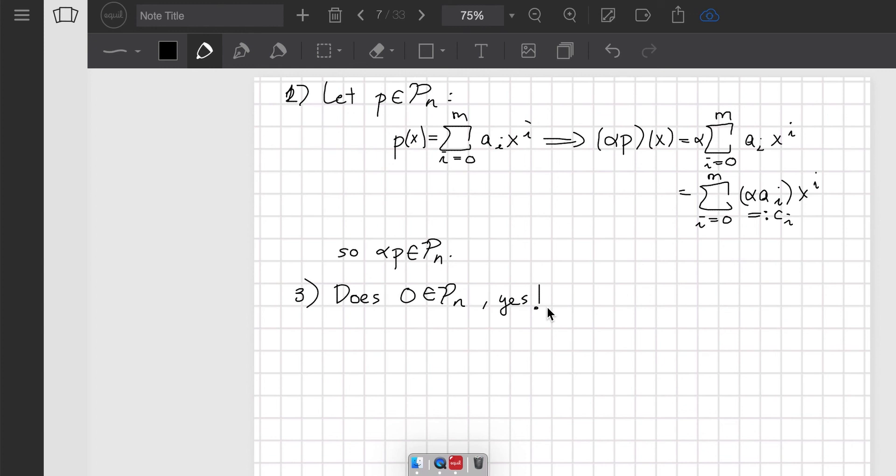Therefore, because these three conditions are met, P_n is indeed a subspace of C. And that finishes our proof.